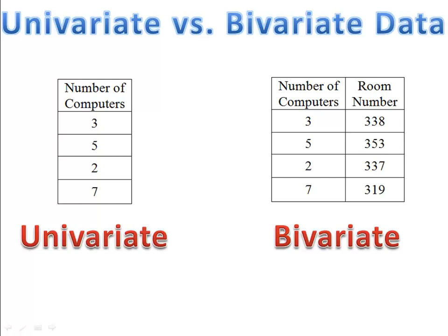When it comes to comparing univariate and bivariate data, the only difference is the number of pieces of information we collect. If our table has one column — meaning we collected one piece of information — it's called univariate, one variable. If our table has two columns, it's called bivariate — more than one, or in this case two, variables.